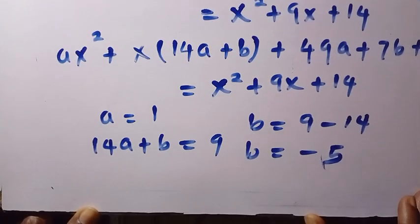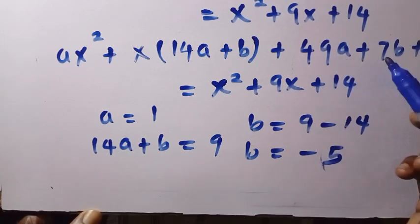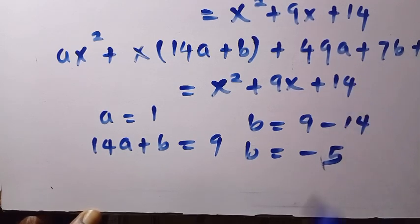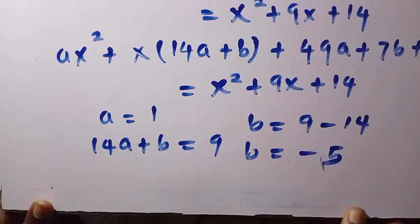So, if b equals minus 5, then we can also get the value of c by substituting the value of a, the value of b into this and equate everything to be equals 14. So, after we get that, then we are going to substitute back into the function that we assumed above. And we get the same result.